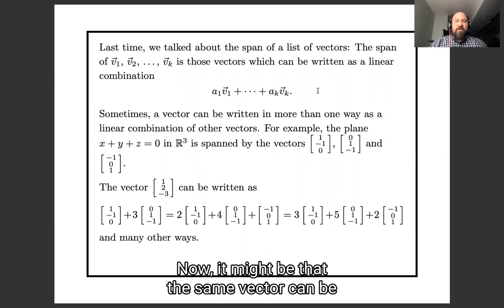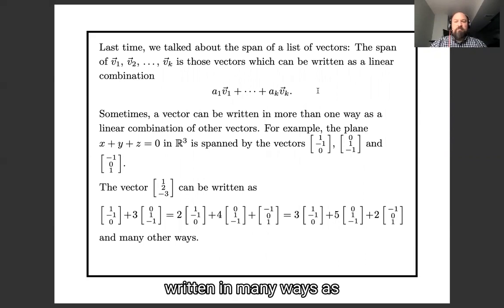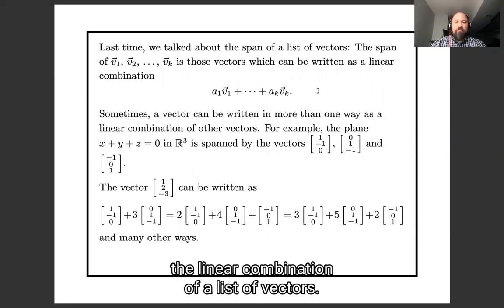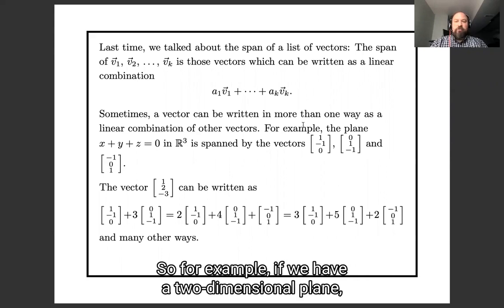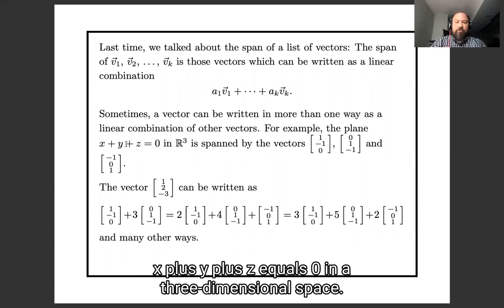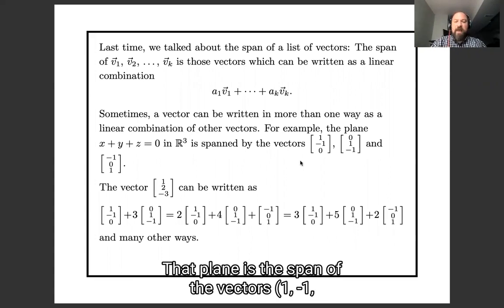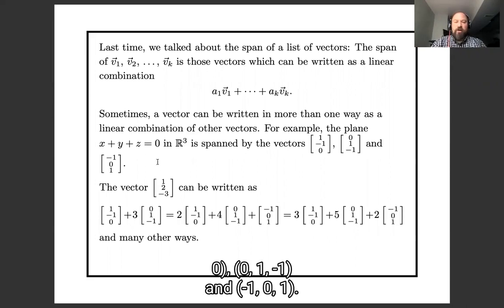Now, it might be that the same vector could be written in many ways as the linear combination of a list of vectors. So for example, if we have a two-dimensional plane x plus y plus z equals zero in three-dimensional space, that plane is the span of the vectors (1, -1, 0), (0, 1, -1), and (-1, 0, 1).